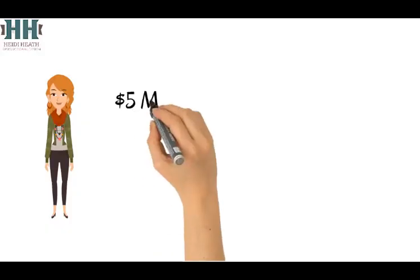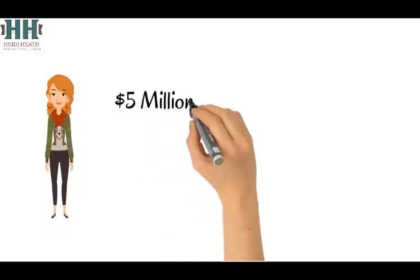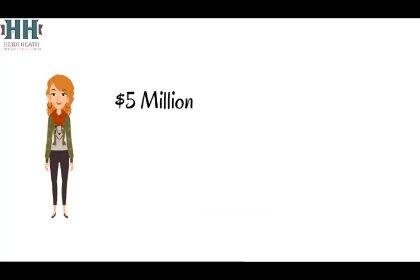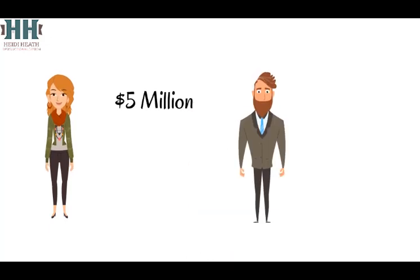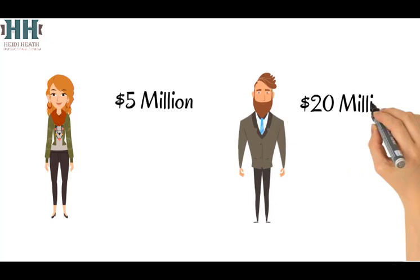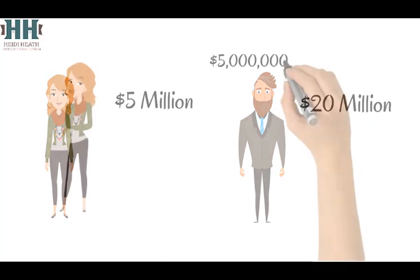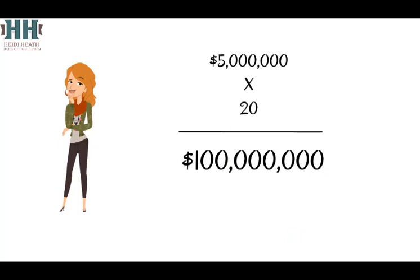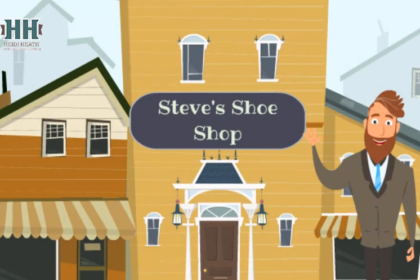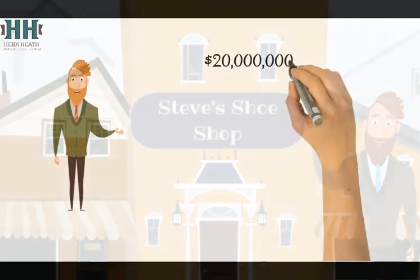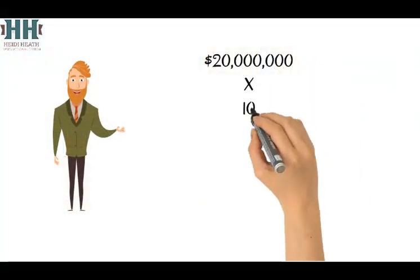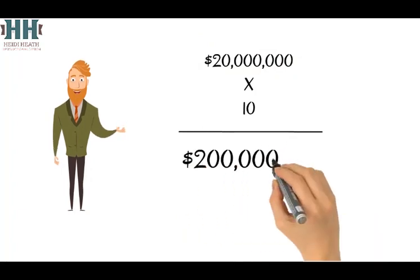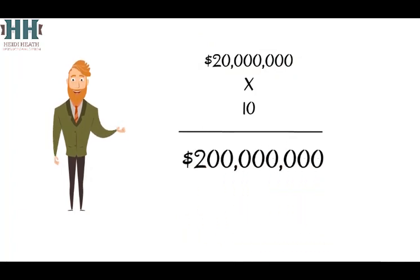Let's say that Betty's boutiques have average yearly sales of 5 million per store, and Steve's shops have average yearly sales of 20 million per store. 5 million per store times 20 stores means Betty's has 100 million in yearly sales throughout the region. Now let's look at Steve's 10 locations: 20 million in sales times 10 locations.